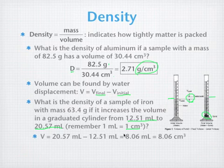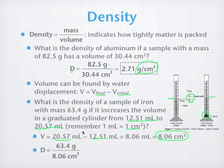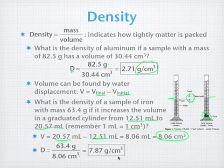First thing we do is find the volume of the iron. Subtract the initial volume from the final volume. We get 8.06 milliliters, or a volume of 8.06 cubic centimeters. We're now going to plug this and the mass into the density equation, 63.4 grams divided by 8.06 cubic centimeters. And we get the density for iron of 7.87 grams per cubic centimeter.